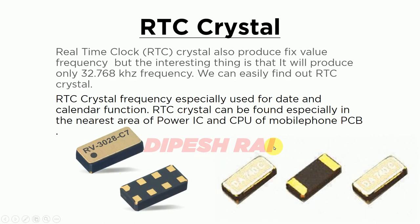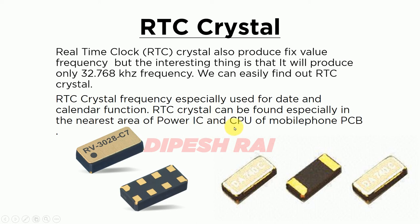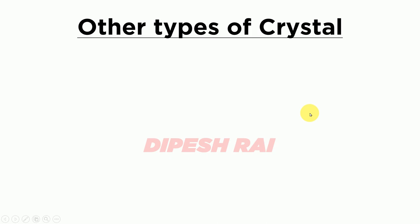Now let's discuss the RTC crystal — the real-time clock crystal. The RTC crystal also produces a fixed-value frequency, but the interesting thing is that it produces only 32.768 kHz. The RTC crystal frequency is especially used for date and calendar functions inside the mobile phone. It can be found in the nearest area of the power IC and CPU on the mobile phone PCB board.